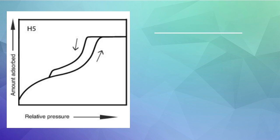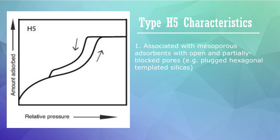The last one, type H5, is associated with adsorbents with pore structures that include both open and partially blocked mesopores, for example, plugged hexagonal-templated silicas.